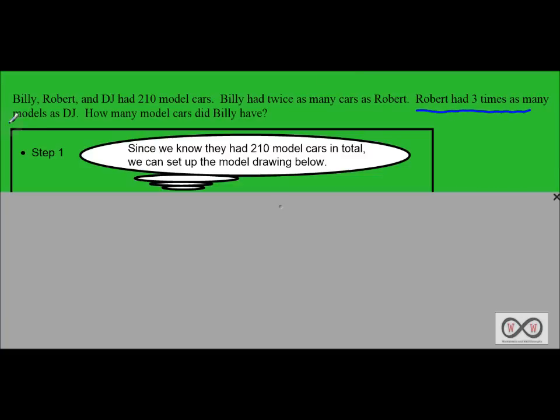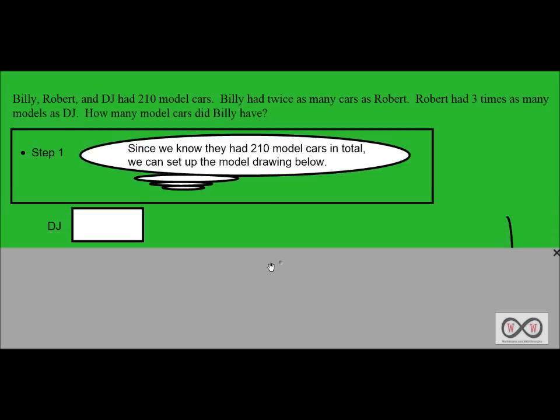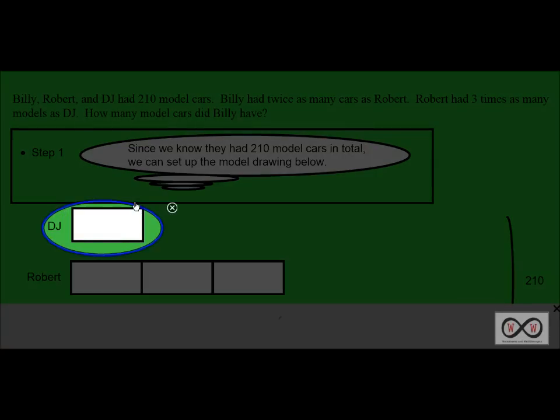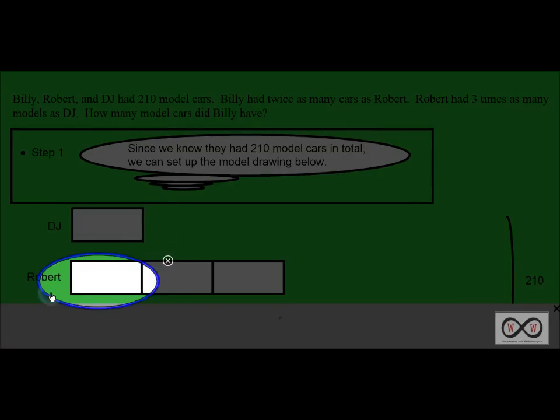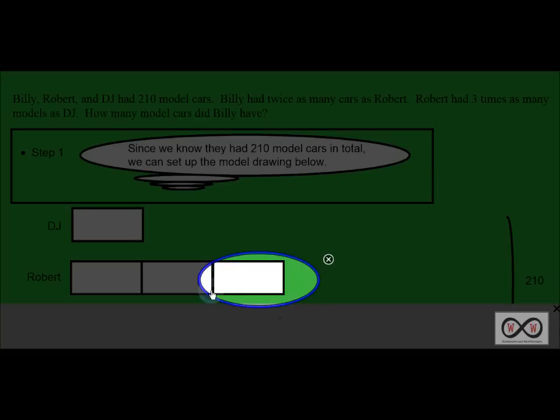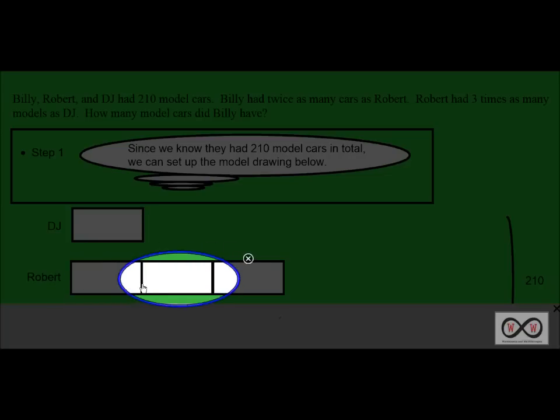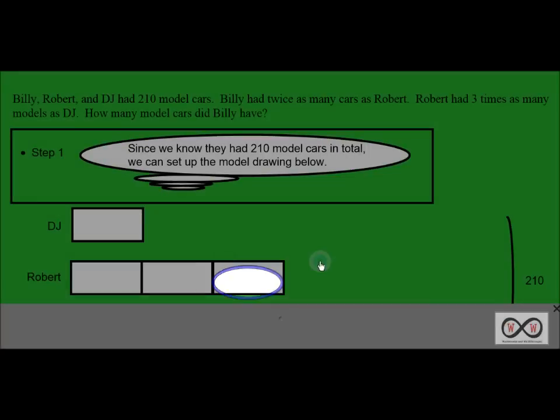Robert had three times as many models as DJ. So knowing this we can start to set up our model drawing. You can see that if you look, Robert has three times as many cars or model cars as DJ. DJ had this amount, and then Robert had three times that amount. So when you look at it visually it kind of makes more sense. It begins to take shape.